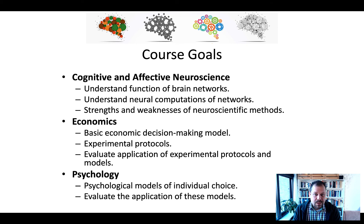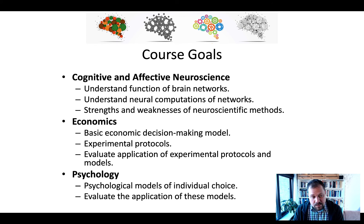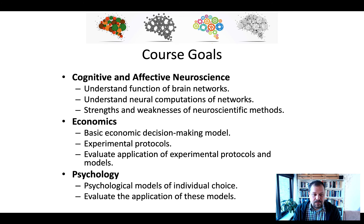We'll go through what experimental protocols mean in the context of neuroscience — what are the limitations and what additional aspects do we have to take into account? I also want you to be able to evaluate the application of these experimental protocols and models in the context of neuroeconomics. And we'll talk about psychology — the third core discipline of neuroeconomics. Psychological models of individual choice will be discussed, and we'll evaluate the application of these models in the context of neuroeconomics.